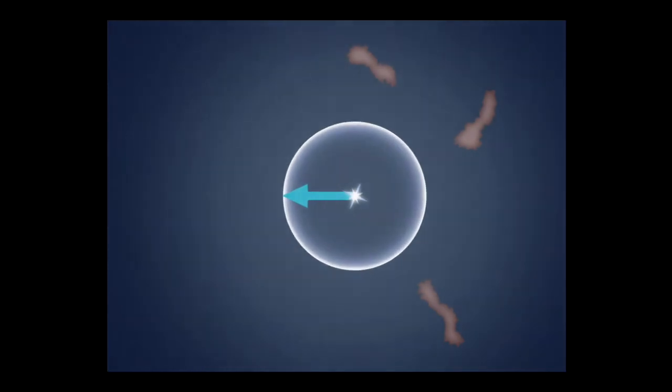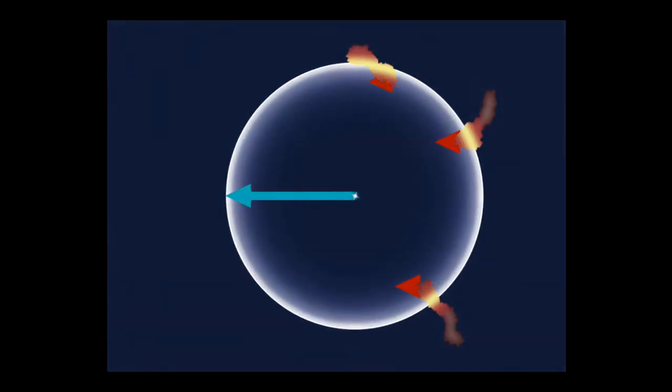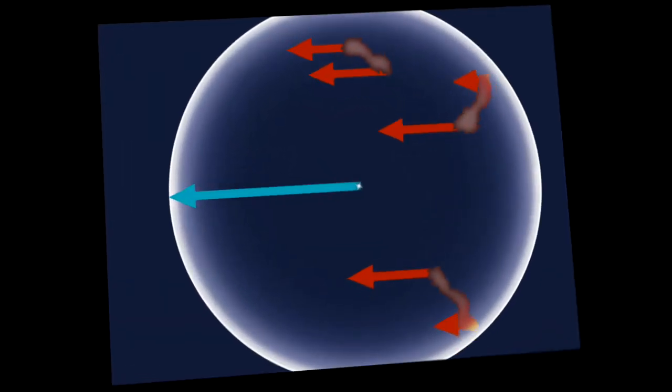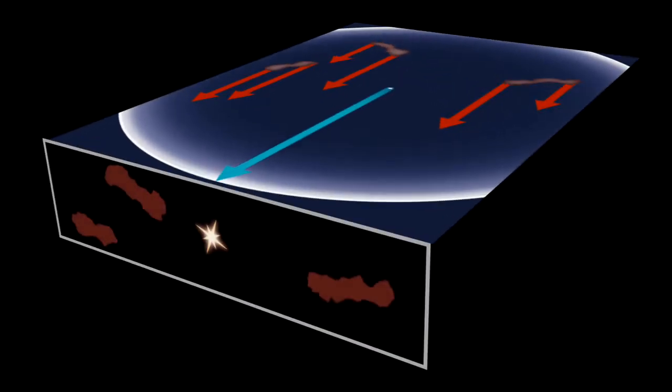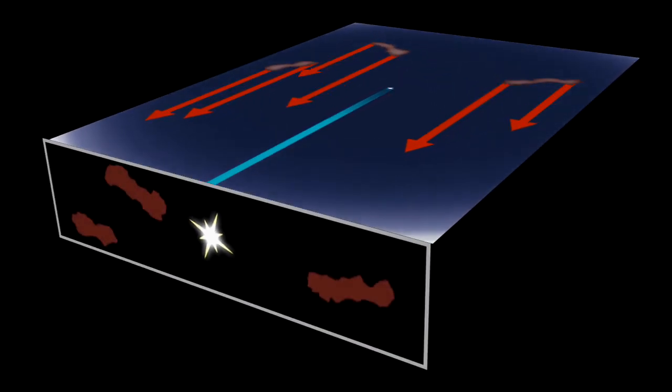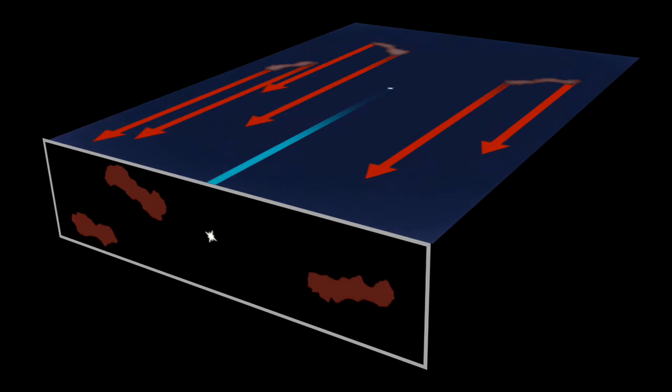The light from a supernova can even take hundreds of years to reach surrounding dust clouds. Following the arrows of light, it's clear we'll see the supernova flash first. The light echoing off of the dust clouds will arrive later at various times, delayed by hundreds of years from the original flash.